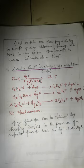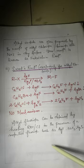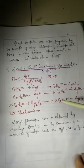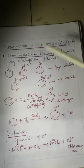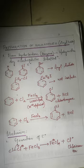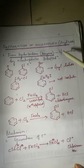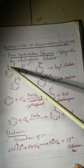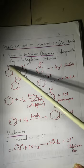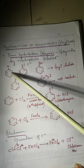In both the Finkelstein and Swarts reactions, there is no mechanism involved. Next is the preparation of aryl halides. Aryl halide is another name for haloarène. The first reaction is from hydrocarbons, specifically benzene. This is called halogenation by electrophilic substitution.